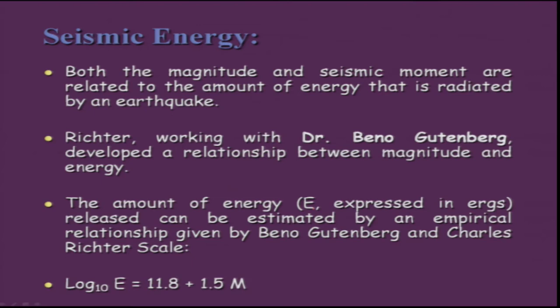The formula is: log E = 11.8 + 1.5M, where the two constants are 11.8 and 1.5, and M is the magnitude. For example, if the magnitude is 3, you can calculate how much energy was released. Similarly, you can compute the energy for magnitude 8, and then determine how many magnitude-3 earthquakes would be needed to compensate for one magnitude-8 earthquake.